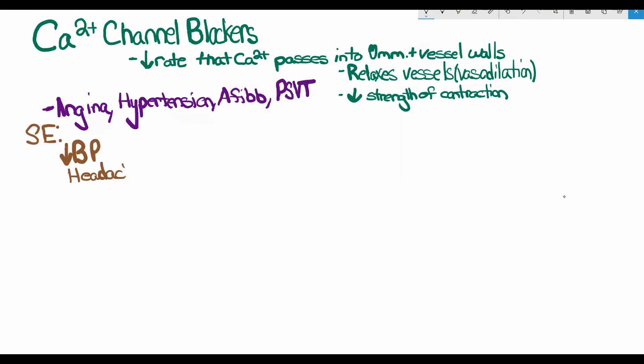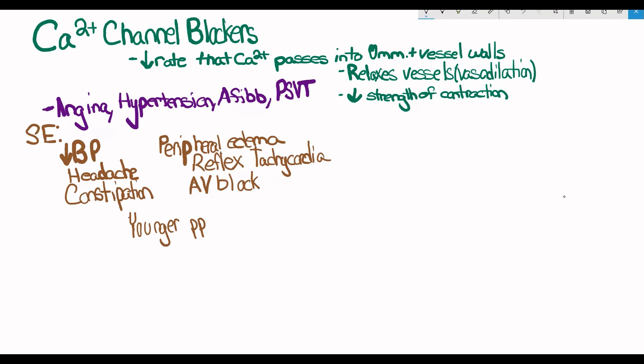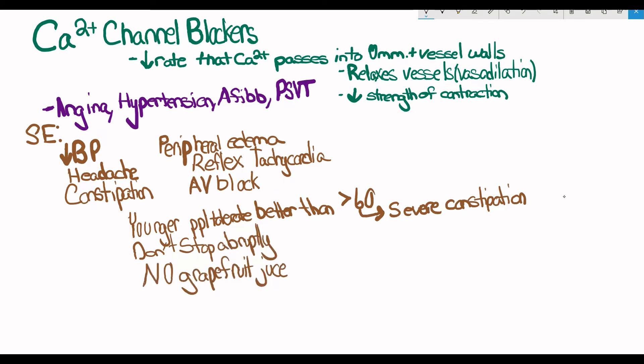Side effects include hypotension, headache, constipation, peripheral edema, reflex tachycardia, and an AV block. For the reflex tachycardia, your physician might pre-treat you with a beta blocker, but generally the two drugs aren't prescribed together. Younger people generally tolerate the drug better than those older than 60. For the older patients, this drug causes severe constipation. Just like beta blockers, don't stop taking it all of a sudden. And another thing to note is that you shouldn't be drinking grapefruit juice. It increases the blood concentration, and that increases the side effects.